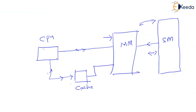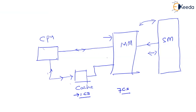Cache memory will take one clock cycle. In order to search for a data element, if it is present in the cache, it takes one clock cycle to locate and retrieve it. If the data element is not present in the cache, the CPU has to go to the main memory, which takes seven clock cycles to locate and fetch the data element. So the access difference is one clock cycle for cache and seven clock cycles for main memory.